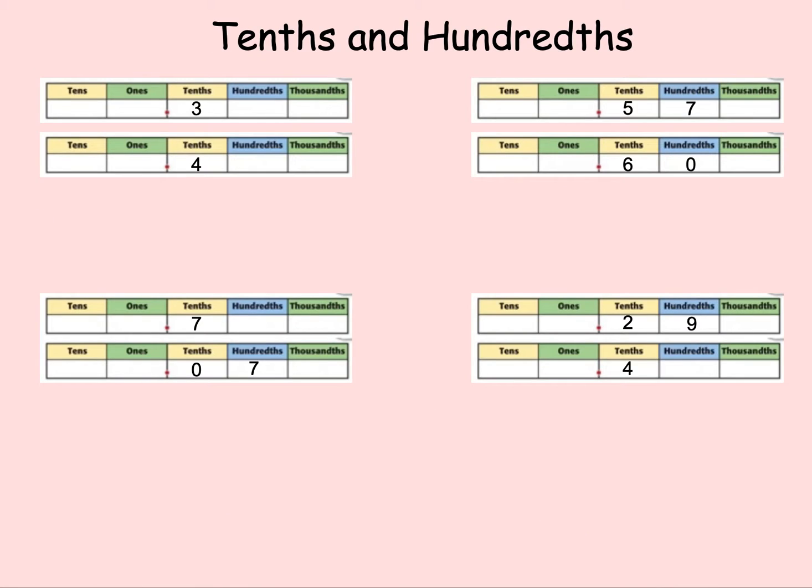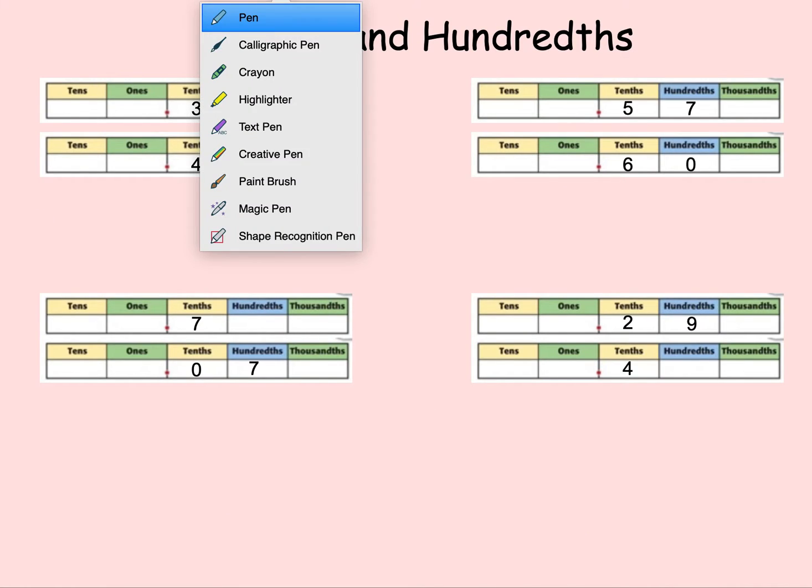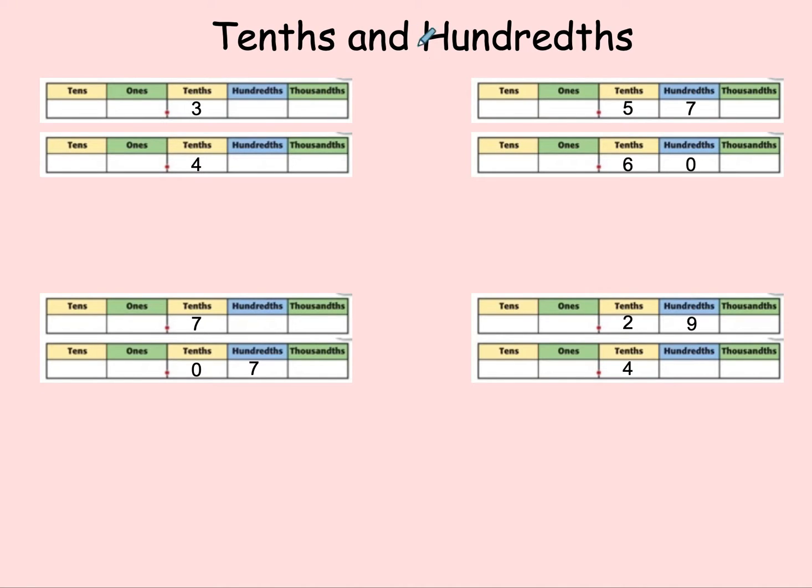Now we can also do the same thing on our place value chart. As we look on our place value chart, we have this first one: three tenths and four tenths. Well, if we're going by place, we can see four tenths...